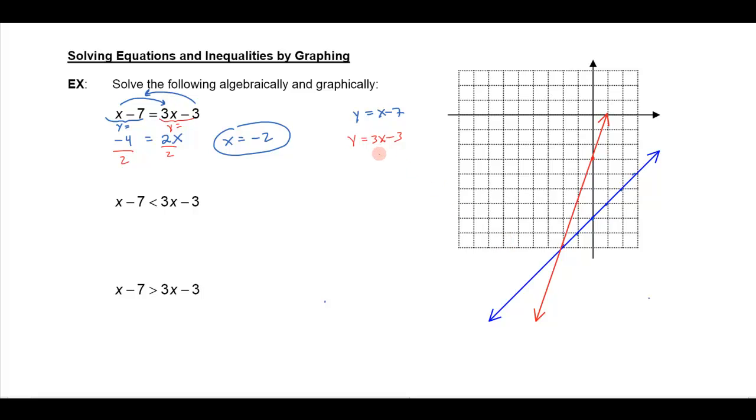Notice that where the red line, the 3x minus 3, equals the blue line, the x minus 7, is right here. They intersect right here. And notice that that point of intersection is at negative 2. So you can see that at x equals negative 2, if I were to plug negative 2 into the left-hand side, the blue equation, I'm going to get this value down here, negative 9. And notice if I plug negative 2 into this equation, the red one, it's also going to be negative 9. 3 times negative 2 is negative 6 minus 3 is negative 9. So that's the one point where they intersect.